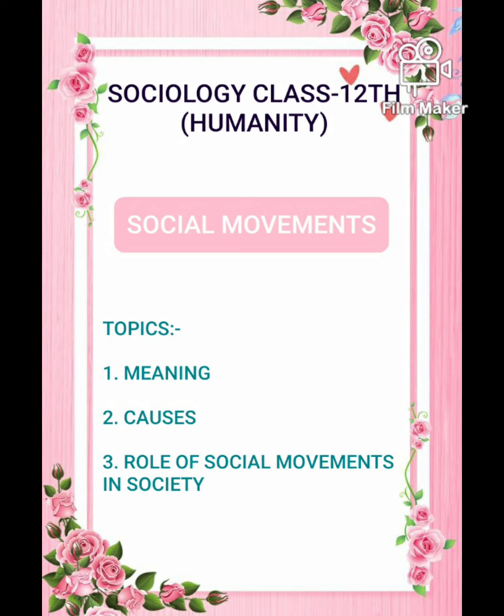The former are called reform movements and the latter are called revolutionary movements. Social movements may be of numerous kinds such as religious movements like the Sikh movement, reform movements like the civil rights movement, or revolutionary movements like the Indian national freedom movement. Some examples of social movements are movements to save wildlife, fascist movement, communist movement, tribal movement, Dalit movement, civil rights movement, women's movement, etc.